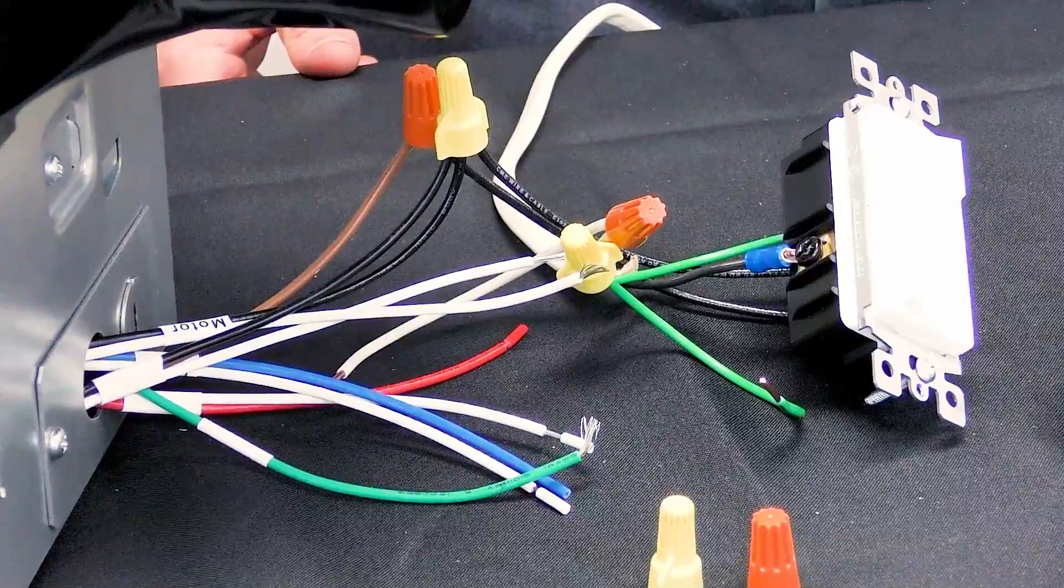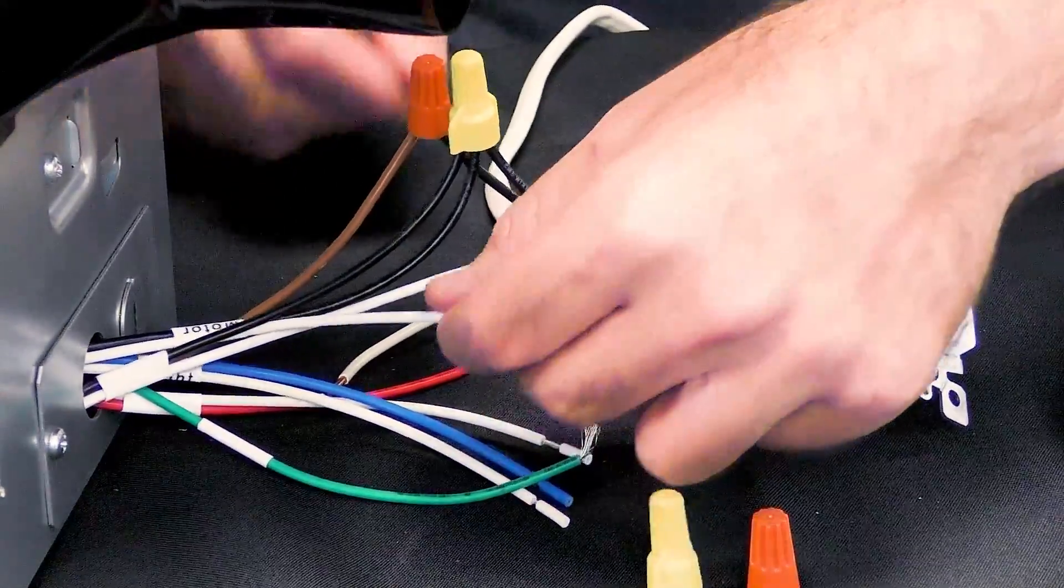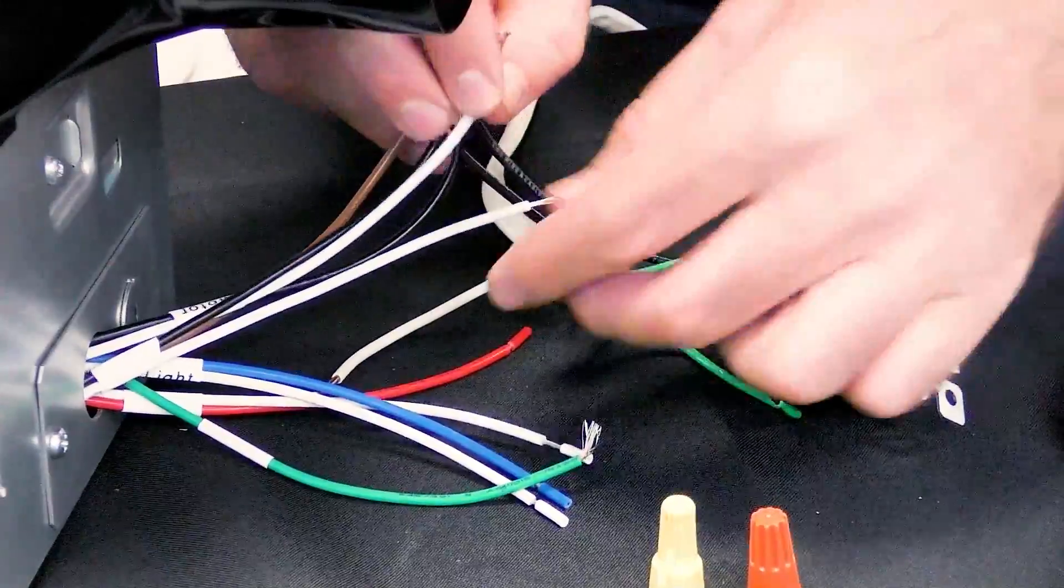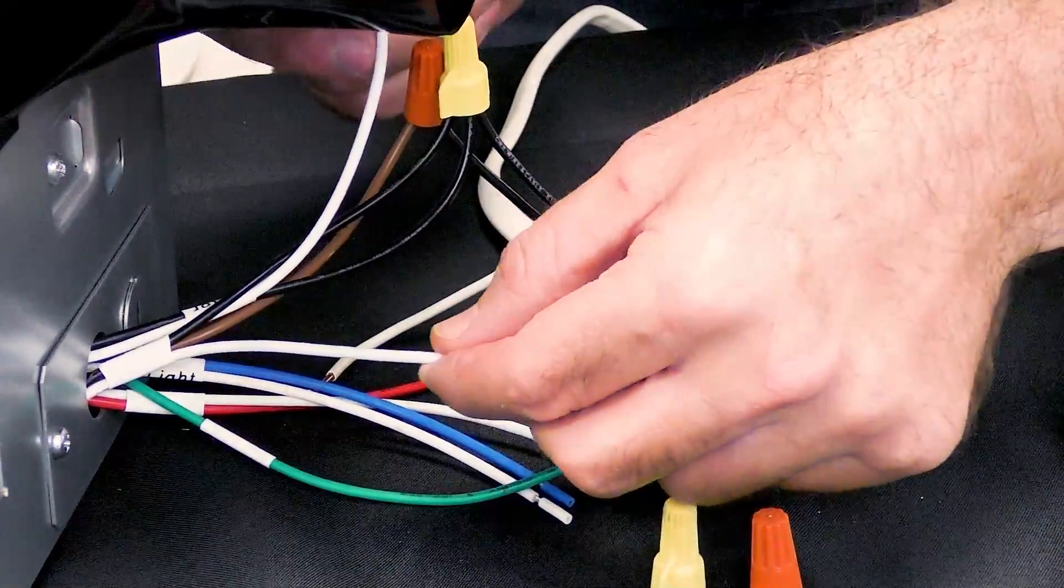You will be left with the white neutral and green ground wires. Take the white neutral wires and wire nut them all together.